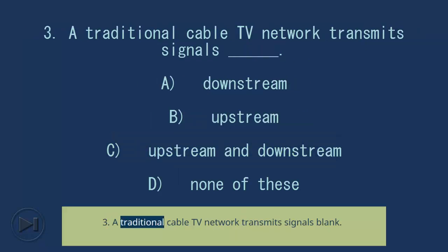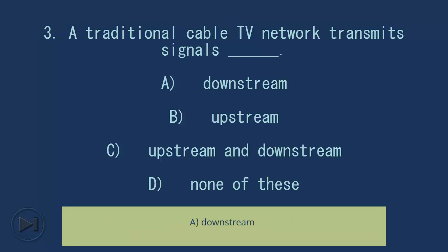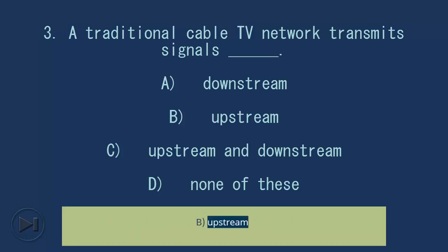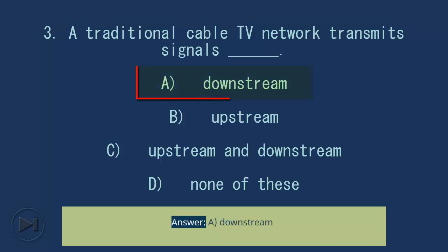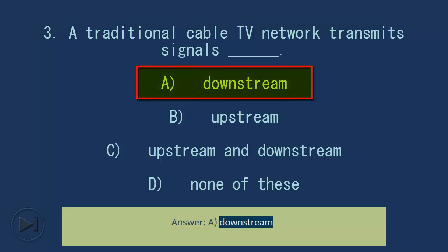Question 3: A traditional cable TV network transmits signals blank. A. Downstream. B. Upstream. C. Upstream and downstream. D. None of these. Answer: A. Downstream.